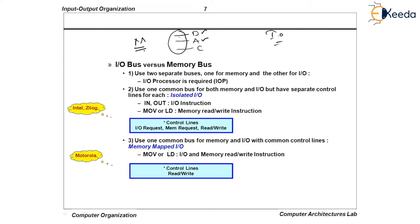So the designer uses two separate bus systems — that is, separate data line, address line, and control line for main memory, and separate data line, address line, and control line for IO devices. This is called distinct IO. In distinct IO, the CPU uses one bus to communicate with the main memory and another bus to communicate with the IO devices.